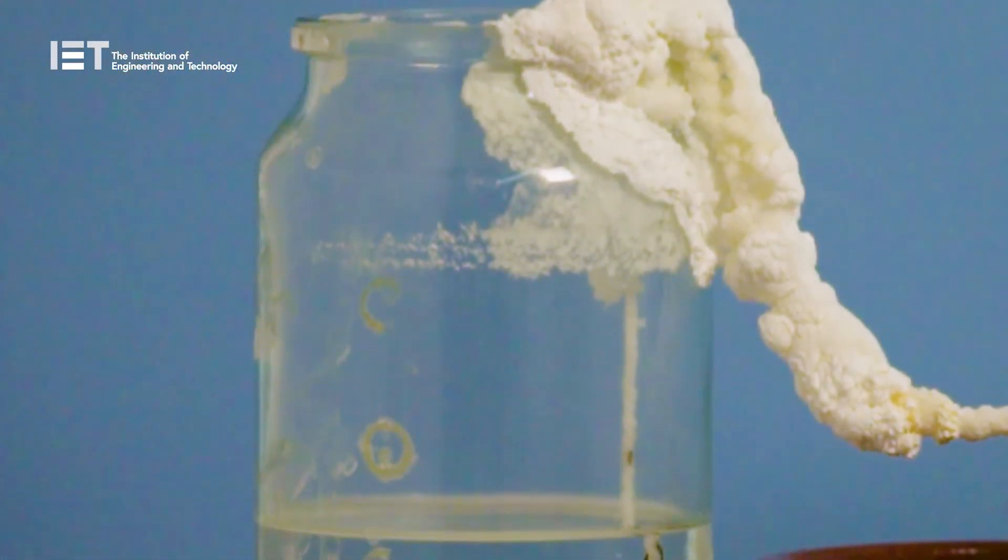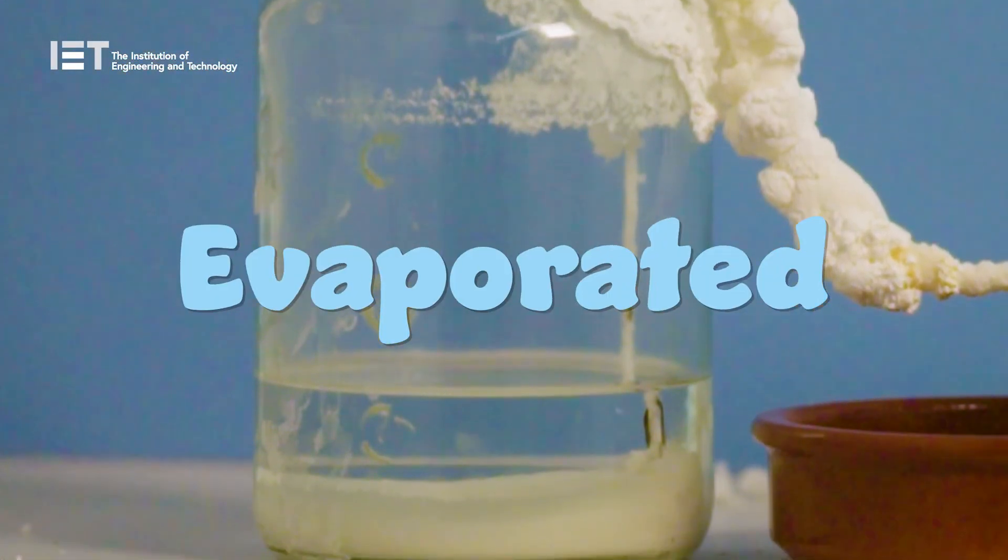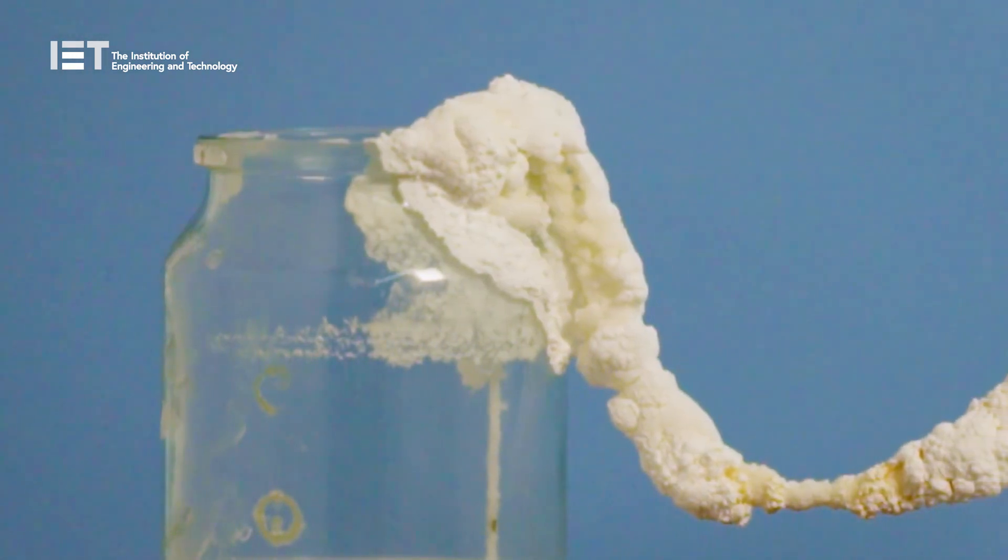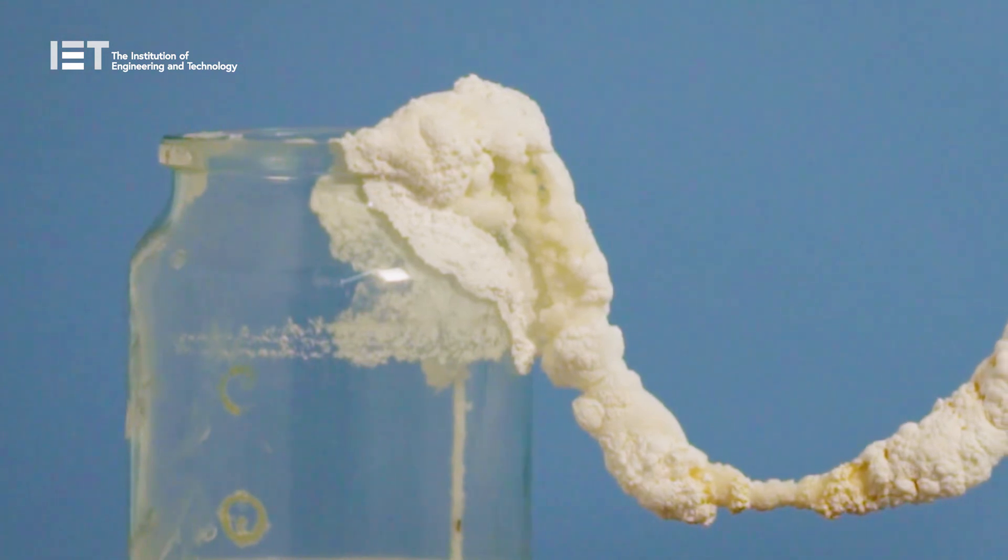Over time, the water in the solution in the drips dried out or evaporated, leaving little bits of the bicarbonate of soda behind, which clump together into a crystal.